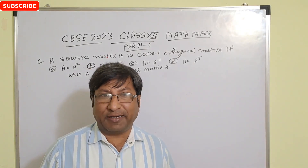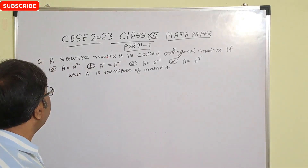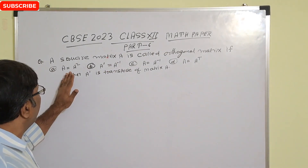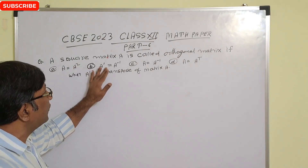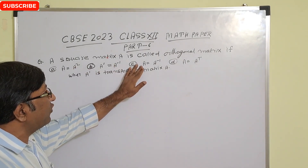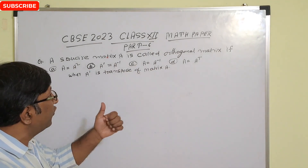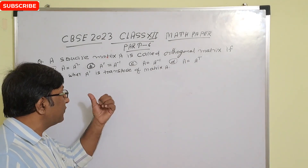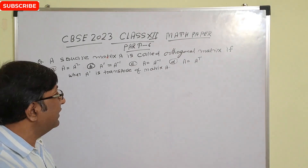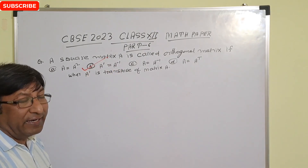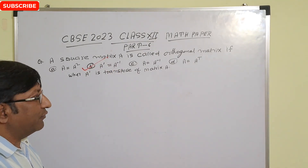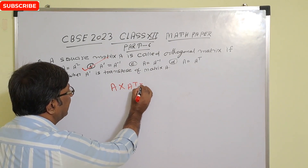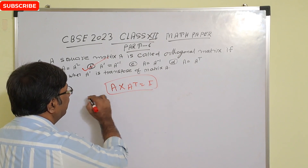Most important question of matrix. A square matrix A is called an orthogonal matrix if A equals A-squared A-dash, that is A transpose equals A inverse. We know an orthogonal matrix is that type of square matrix whose transpose equals A inverse. You can also write A into A transpose equals the identity matrix.